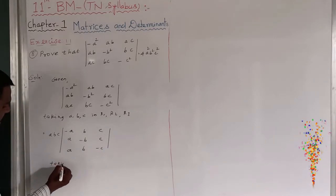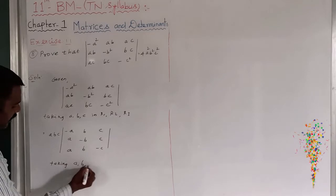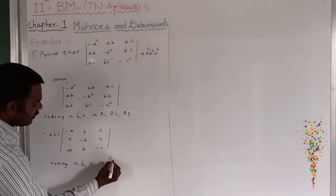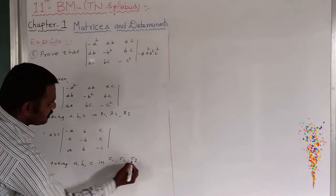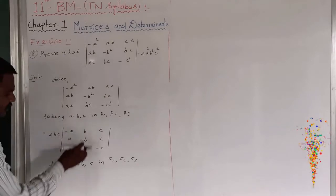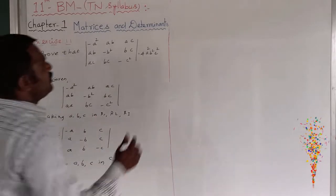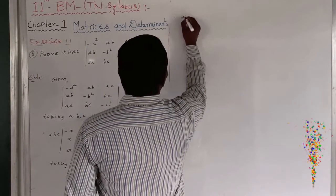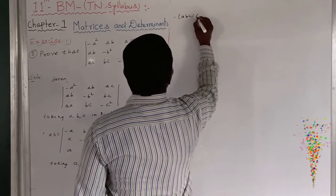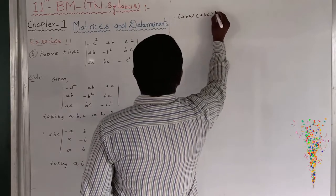Now taking a, b, c from columns c1, c2, and c3. Taking a from c1, b from c2, and c from c3, the remaining determinant has elements a, b, c in each position.